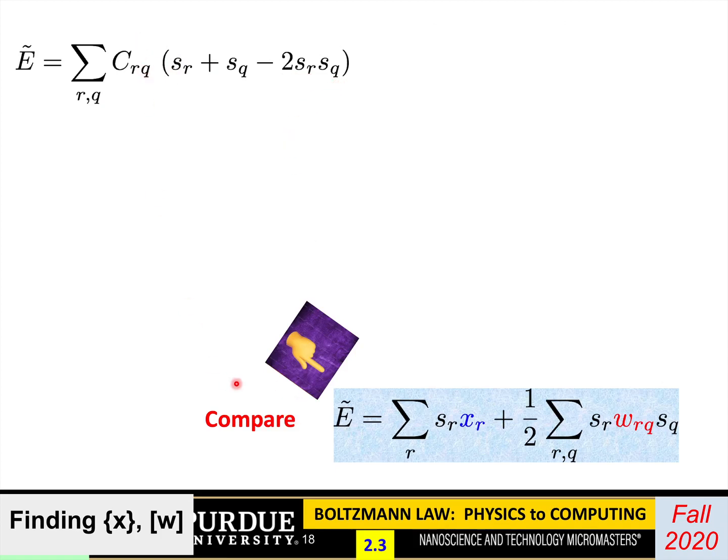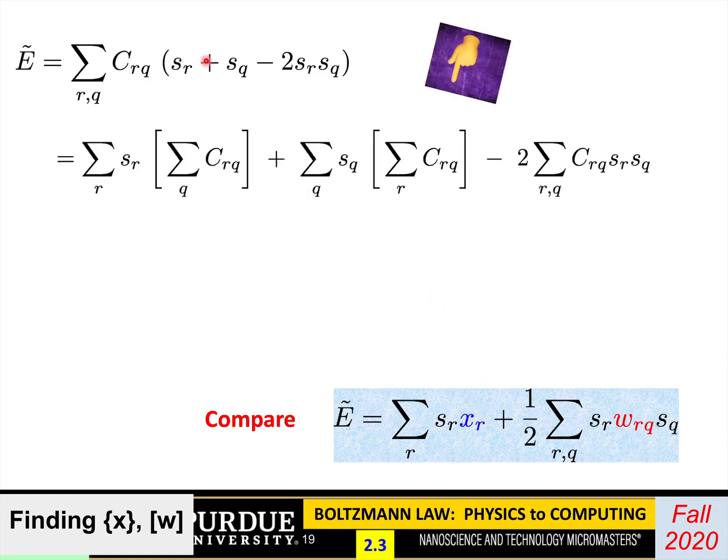So whatever I'll do for the next few slides is work on this a little bit algebraically so that I can come out with the X and W matrices that I need in order to do my time sampling. First thing is I square this. A minus B square is A square plus B square minus 2AB. I note that S being this binary variable 0 or 1, S square is really equal to S. So I drop the squares. So then basically E becomes CRQ times SR plus SQ minus 2 SR SQ.